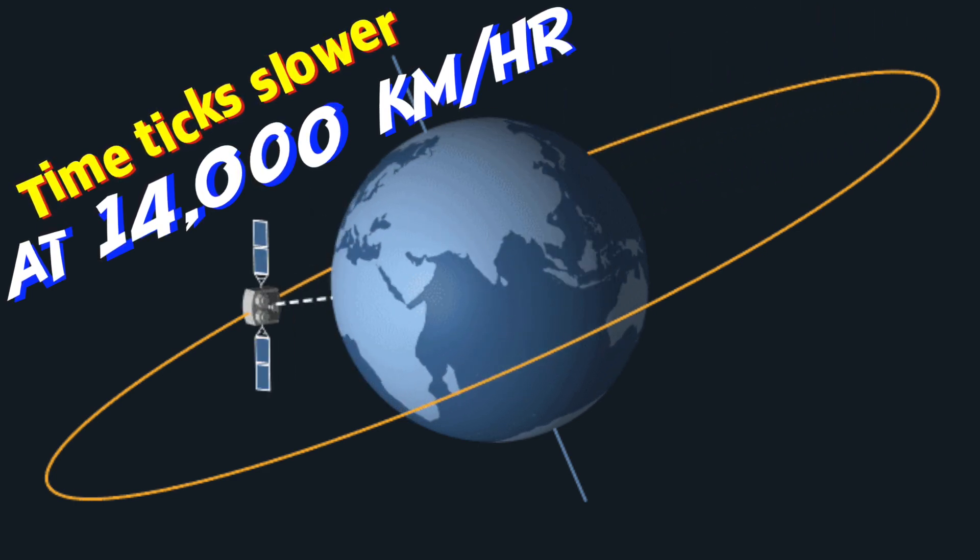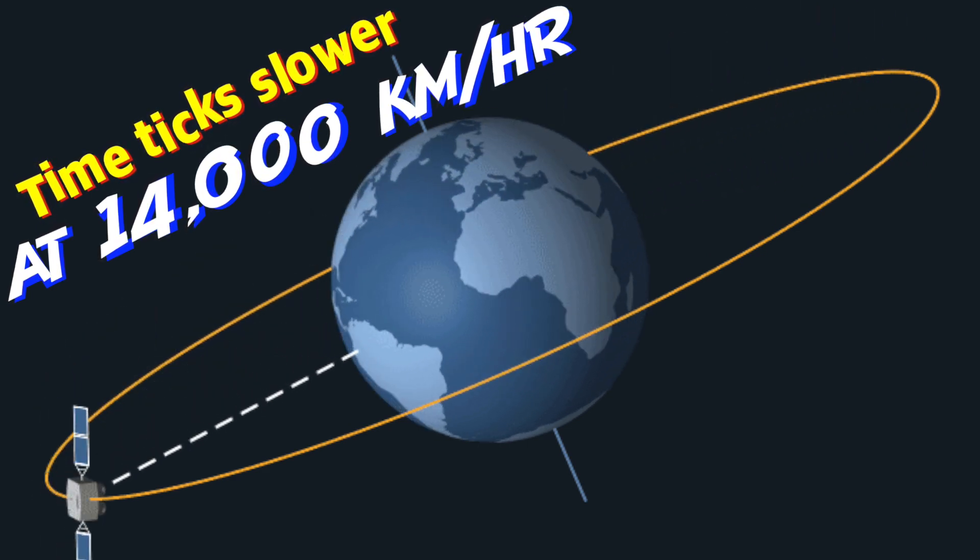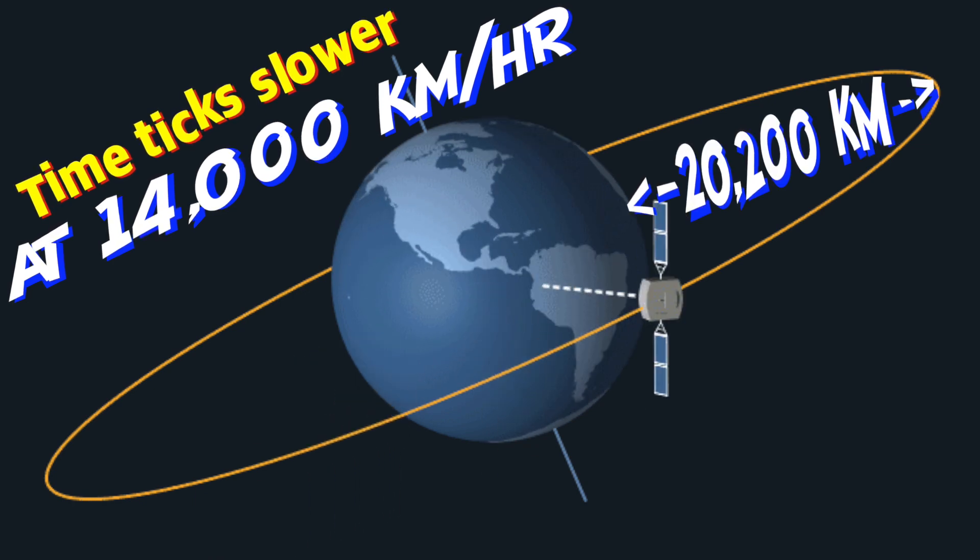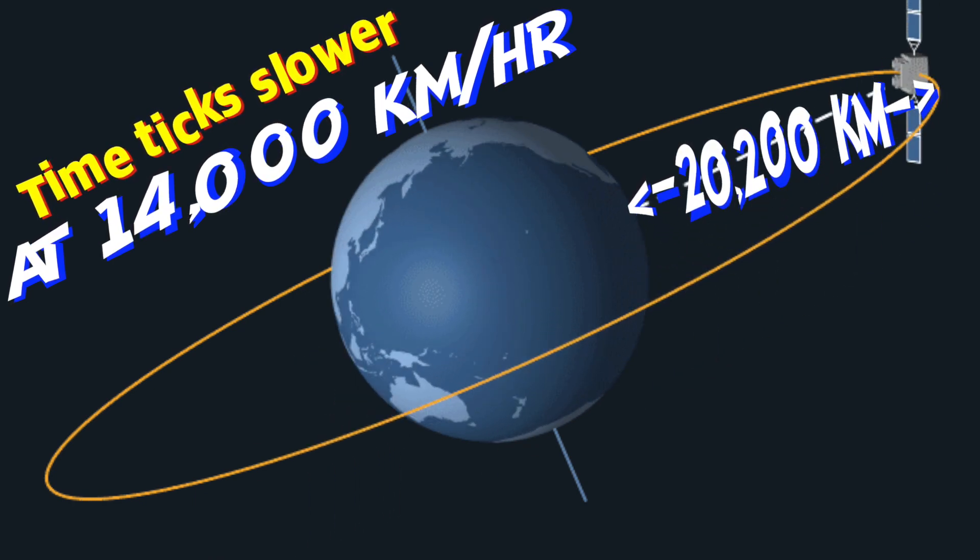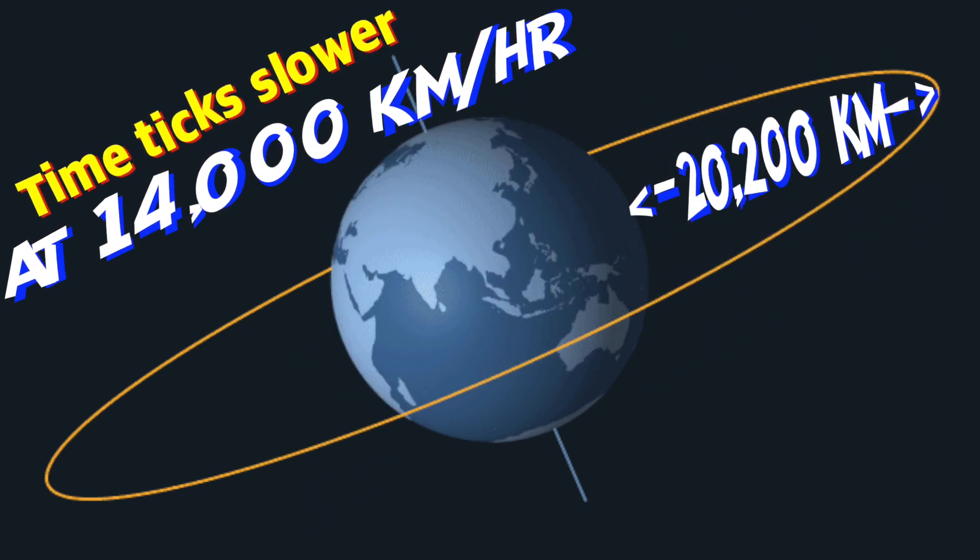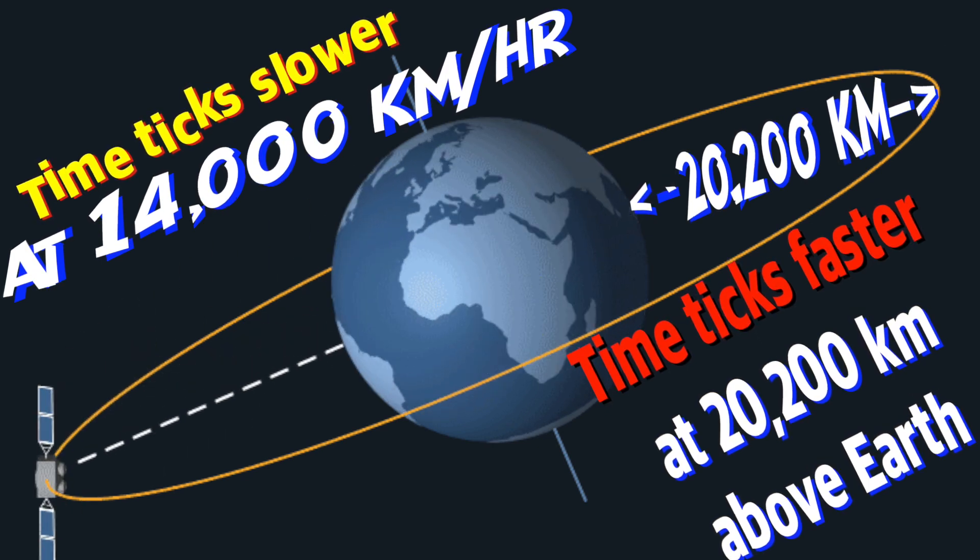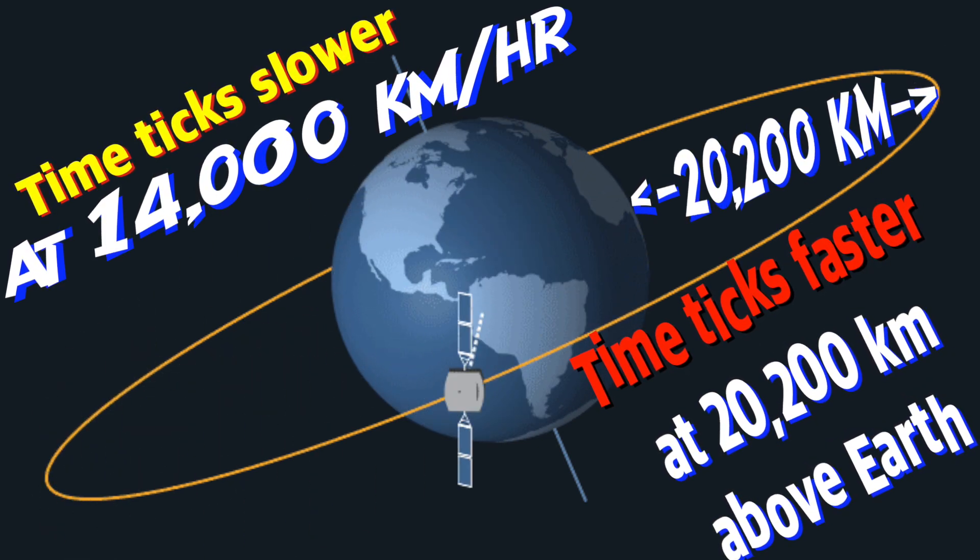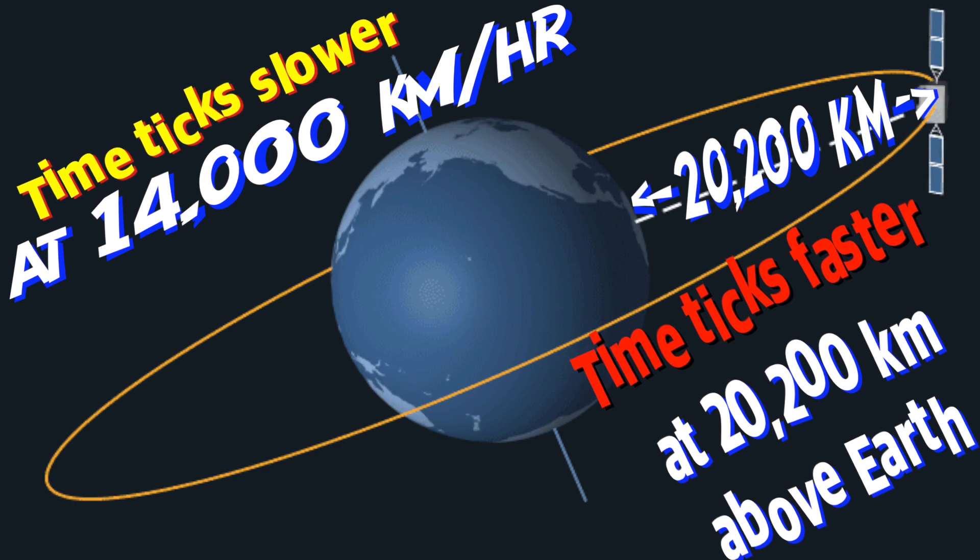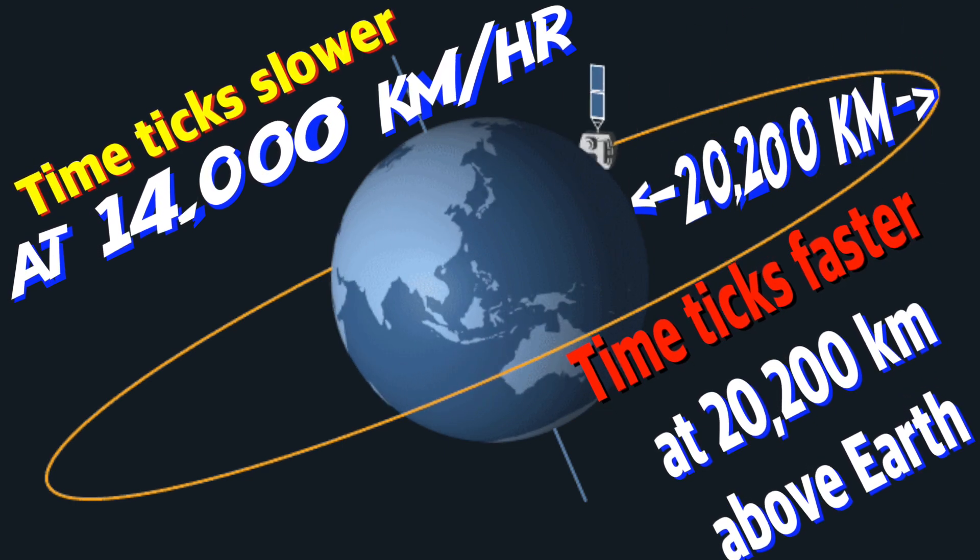But at the same time, GPS satellites are above in the space. They are at about 20,200 kilometers above the Earth's surface. But why 20,200 kilometers? Because the GPS satellite is above the Earth's surface, what happens is the time ticks faster.